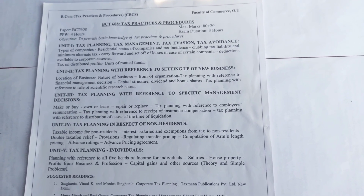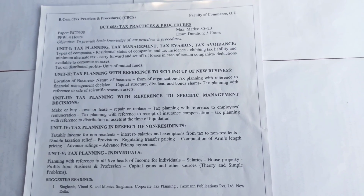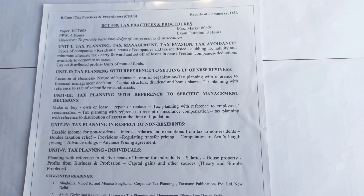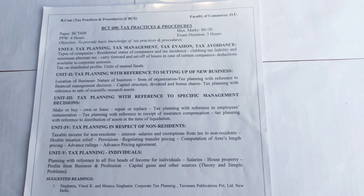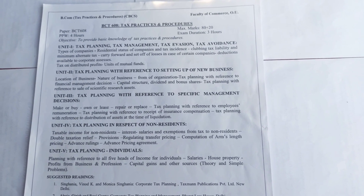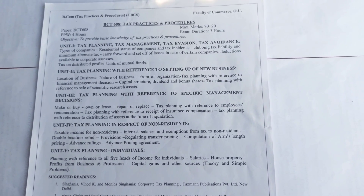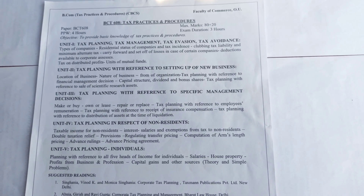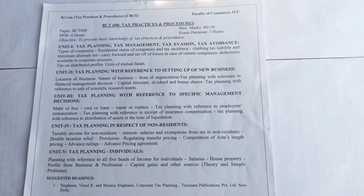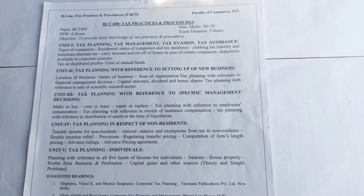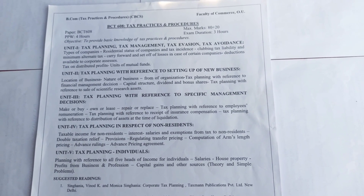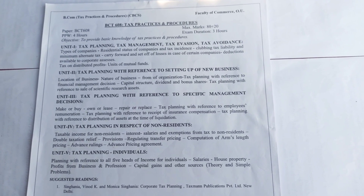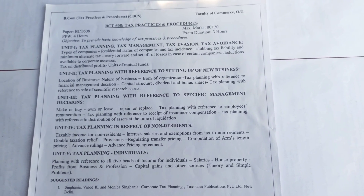608 Tax Practice and Procedure Syllabus. Unit 1: Tax Planning, Tax Management, Tax Evolution, Tax Avoidance, Types of Company, Residential Status of Company and Tax Incidents, Clubbing of Tax Liabilities, Minimum Alternate Tax, Carry Forward and Set-off of Losses in Case of Certain Companies, Deductions Available to Corporate Assesses.